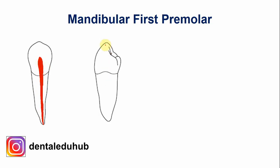This is the buccal-lingual section of the mandibular first premolar. The buccal cusp is sharp and the lingual cusp is more rounded, and it sometimes appears like a small canine.